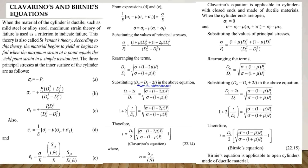We start from Clavarino and Birnie's equations. These two equations are generally used for ductile materials of the cylinder such as mild steel or alloy steel, where the maximum strain theory of failure is used as a criteria to indicate failure. This theory is also called Saint-Venant's theory, and according to this theory, the material begins to yield or fail when the maximum strain at the point equals the yield point strain in a simple tension test.